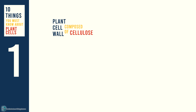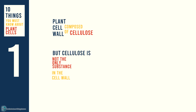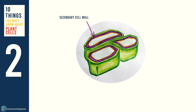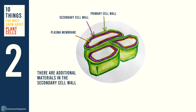A plant cell wall is composed of cellulose, but it is not the only substance found in the cell wall. A matrix composed of hemicellulose and pectin can be found here as well. In some plant cells, there is a secondary cell wall found between the primary cell wall and the plasma membrane. This is where you will find additional materials such as lignin and suberin.